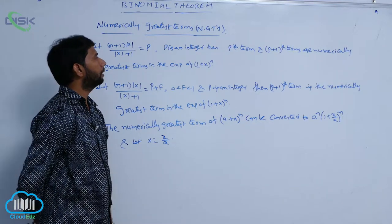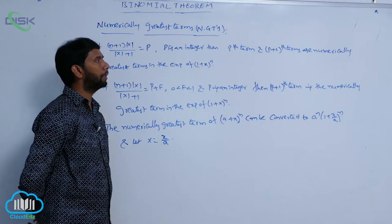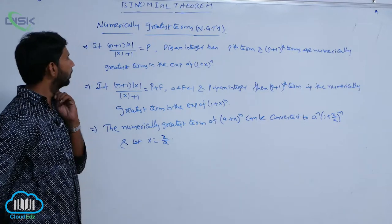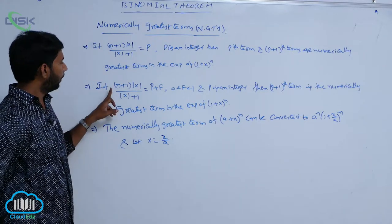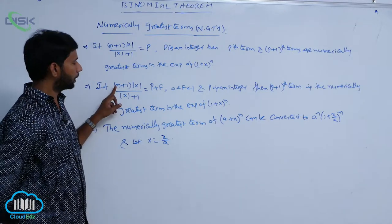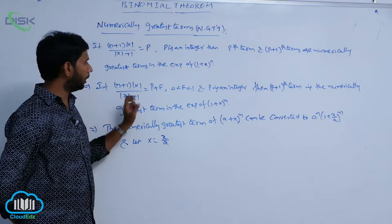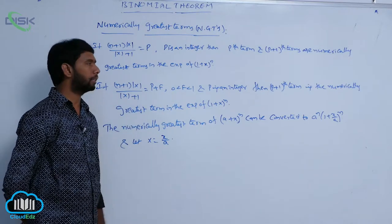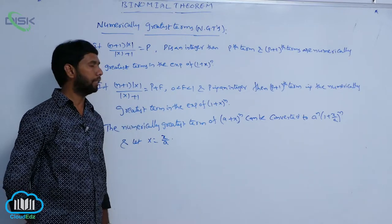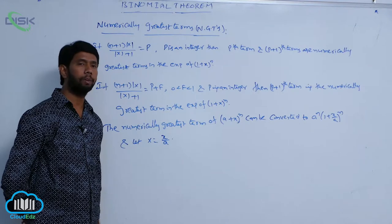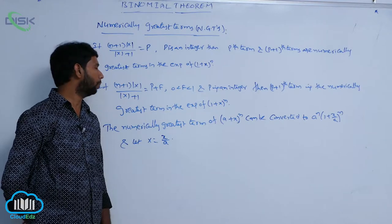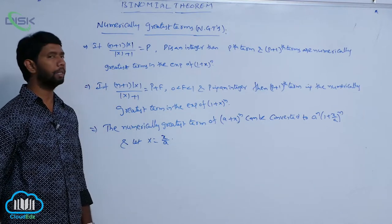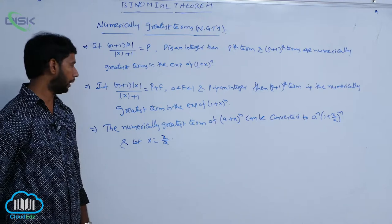Therefore, the P-th term and (P+1)-th term are numerically greatest. In the second case, if (N+1) times mod X divided by (mod X + 1) equals P + F, where 0 < F < 1 and P is an integer, then the (P+1)-th term is the numerically greatest term in the expansion of (1 + X)^N.